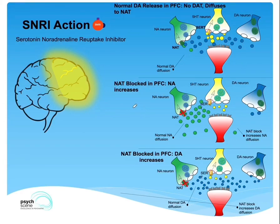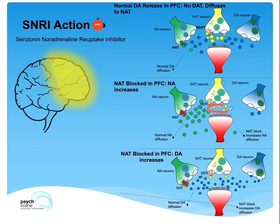What happens when we administer an SNRI? We know that an SNRI is a reuptake inhibitor, so it blocks the reuptake of noradrenaline and serotonin by blocking the transporter proteins. By blocking the SIRT, the serotonin transporter protein, there is accumulation of serotonin in the synaptic cleft, allowing for action. By blocking NAT, the noradrenaline transporter, there is accumulation of noradrenaline, allowing for action.